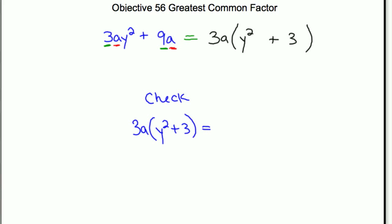So when we use the distributive property here, we can see that 3a times y squared is 3ay squared, and 3a times 3 is 9a. That matches the original problem, so the solution here, the factored form of 3a squared y plus 9a is 3a times y squared plus 3.